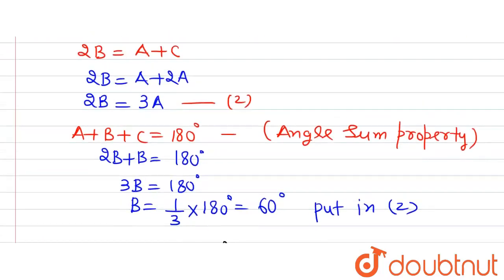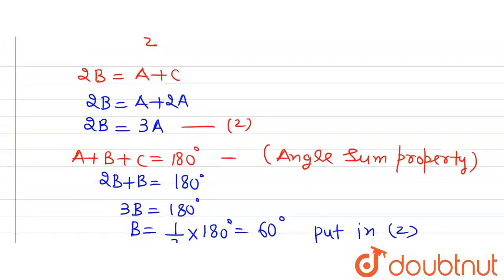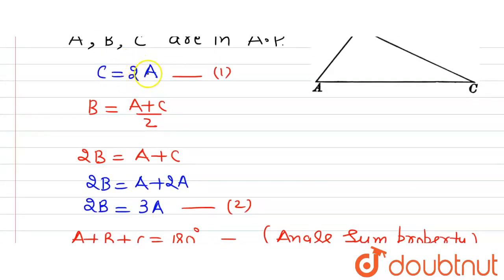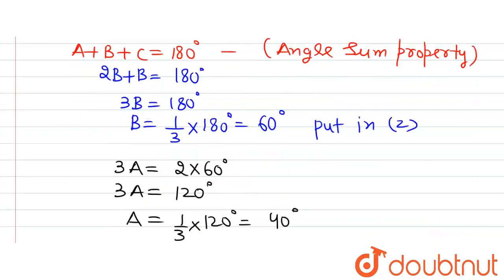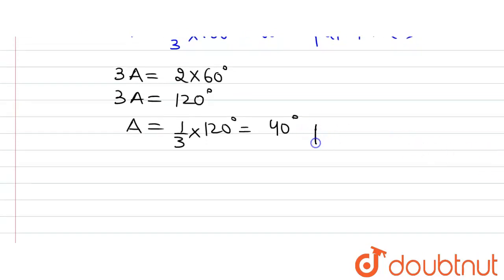Now we have A is equal to 40 degrees, and now we are supposed to find out C. We know the relationship C is equal to 2A. Putting it in equation 1, we will get C is equal to 2A, that is A is 40 degrees. So C is equal to 80 degrees.